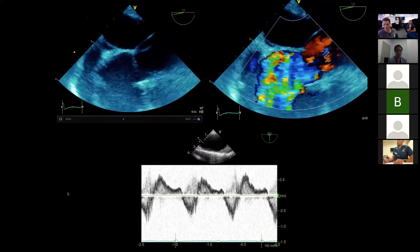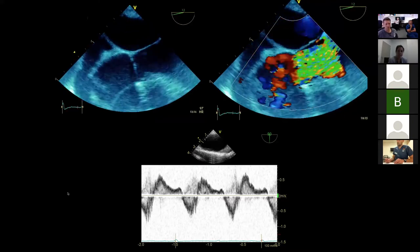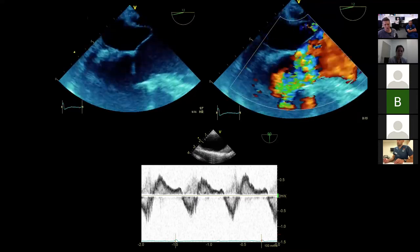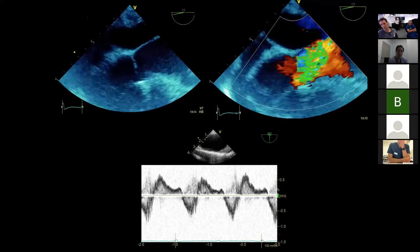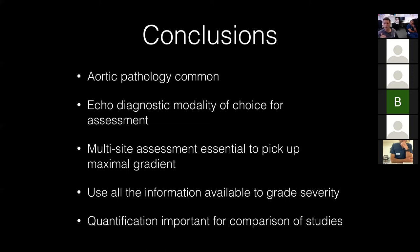Holodiastolic flow reversal in the descending aorta is demonstrated — blood flows away during systole and then reverses during diastole, with an end-diastolic velocity of at least 0.2 m/s, suggesting severe AR. In conclusion: aortic regurgitation is common; assess from multiple views — parasternal long axis, apical five-chamber, and apical three-chamber in particular; use 2D, color Doppler, pulse wave Doppler, and continuous wave Doppler together along with history and examination findings. Quantification is particularly important for at least moderate lesions.